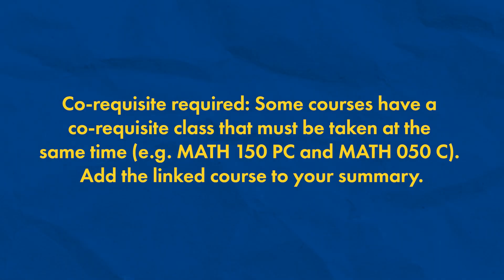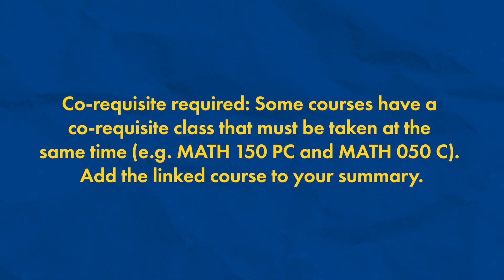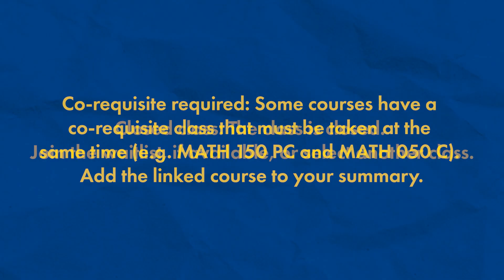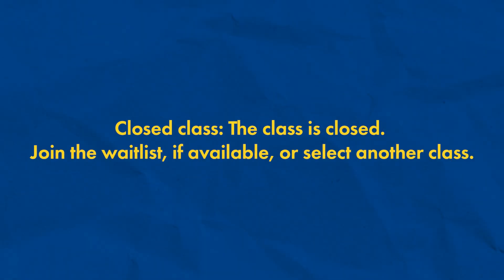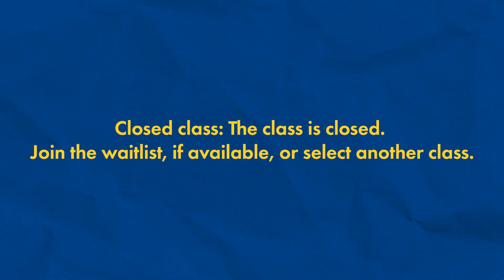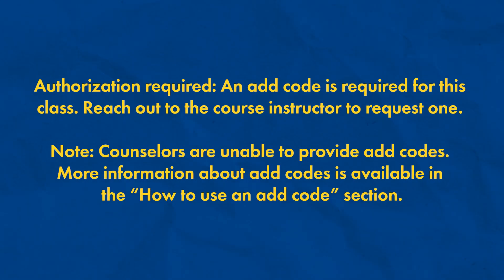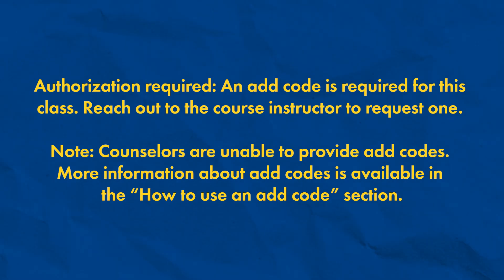Co-requisite Required: some courses have a co-requisite class that must be taken at the same time, like Math 150PC and Math 50C — add the linked course to your summary. Closed Class: the class is closed — join the waitlist if available or select another class. Authorization Required: an add code is required for this class — reach out to the course instructor to request one.